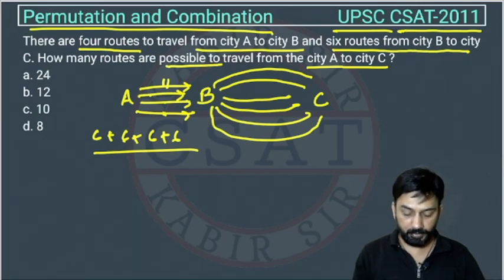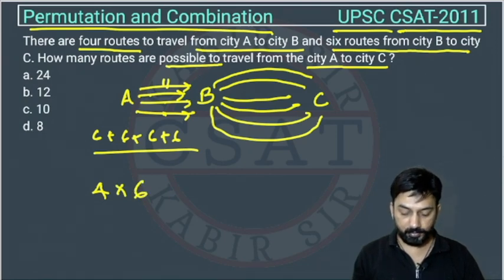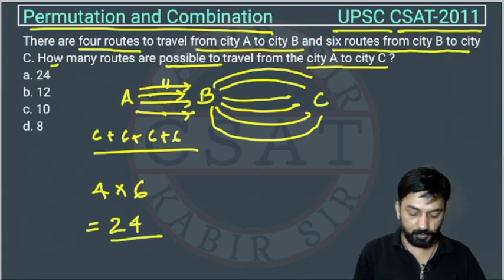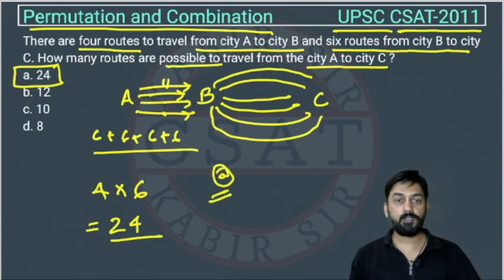The best method to solve this kind of question: from A to B there are 4 possibilities, and for each possibility there are 6 chances. So total is 4 into 6, which equals 24. So the answer is option B — the answer of this question is 24.